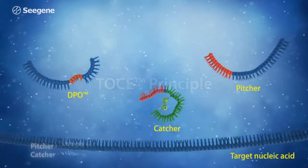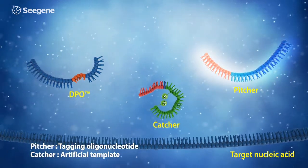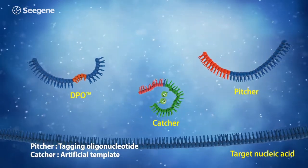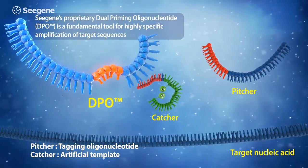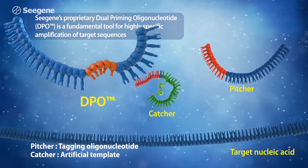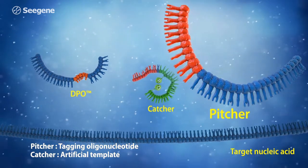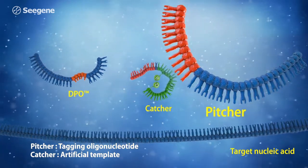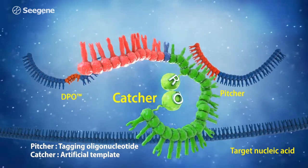The key components of Toast Technology are DPO Primer Pairs, Pitchers and Catchers. The DPO is Seegene's proprietary target-specific primer and provides highly specific amplification of the target region. The Pitcher is a tagging oligonucleotide which hybridizes specifically to the target region. The Catcher is a fluorescently labeled artificial template.